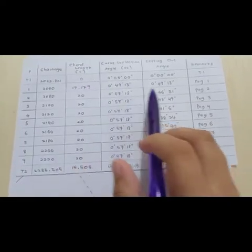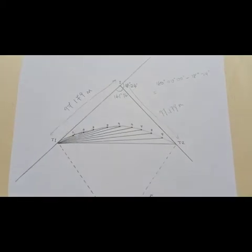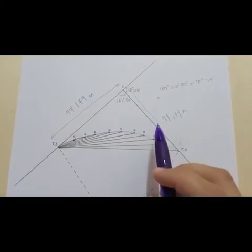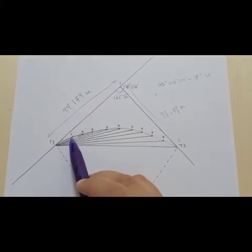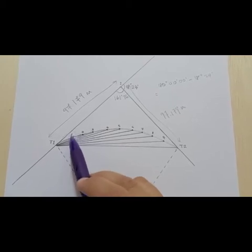Then, based on the bearing 1 in the table, observe until you get that bearing. If the bearing meets the setting out angle, then it is 1.